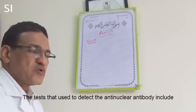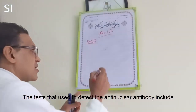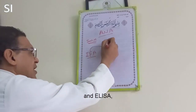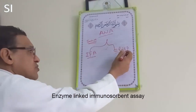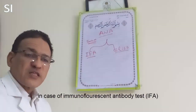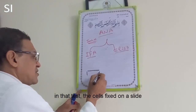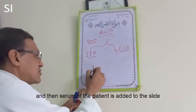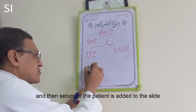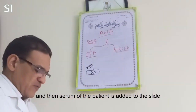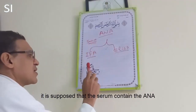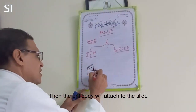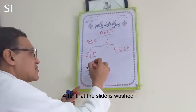The tests used to detect anti-nuclear antibodies include the immunofluorescent antibody technique and ELISA. In the immunofluorescent antibody test, cells are fixed onto a slide, and then the serum of the patient is added to the slide. It is supposed that the serum contains the anti-nuclear antibody, so if it does, the antibody will attach to the slide. After that, the slide is washed.